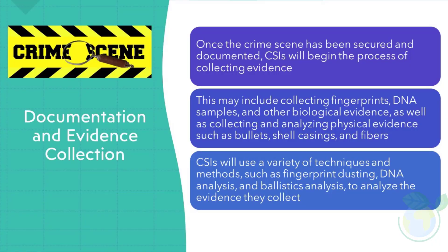Documentation and Evidence Collection. Once the crime scene has been secured and documented, CSIs will begin the process of collecting evidence. This may include collecting fingerprints, DNA samples, and other biological evidence, as well as collecting and analyzing physical evidence such as bullets, shell casings, and fibers. CSIs will use a variety of techniques and methods, such as fingerprint dusting, DNA analysis, and ballistics analysis, to analyze the evidence they collect.